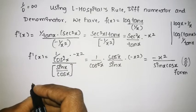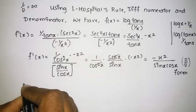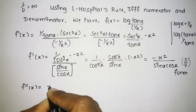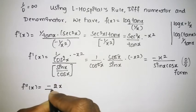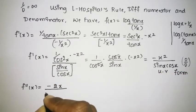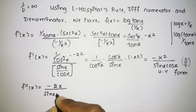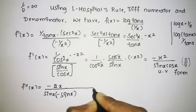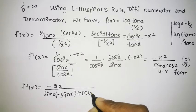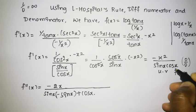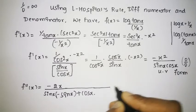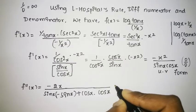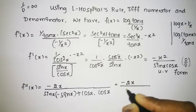The differentiation of f'(x), which is f''(x), equals: differentiation of minus x squared is minus 2x, divided by, using the u·v product rule on sin x·cos x — keeping sin x and differentiating cos x gives minus sin x, plus keeping cos x and differentiating sin x gives cos x. So the denominator becomes minus sin²x plus cos²x.